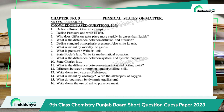Difference between amorphous and crystalline solids. Write down two causes of allotropy. What is meant by allotropy? Write the allotropes of oxygen. What do you mean by dynamic equilibrium? Write down the uses of salt to preserve meat.